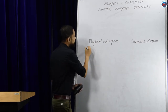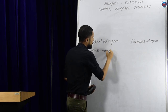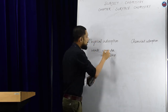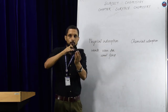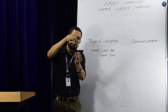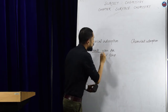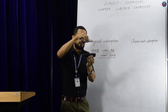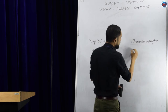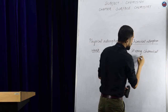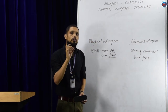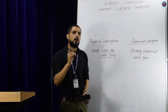In physical adsorption, we have weak van der Waals force of attraction between the adsorbate and the adsorbent. If the force of attraction is strong, like chemical bond force, then the adsorption is known as chemical adsorption. In chemical adsorption, we have strong chemical bond force. Physical adsorption is also known as physisorption, whereas chemical adsorption is also known as chemisorption.